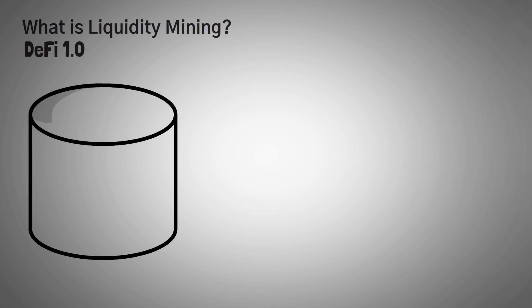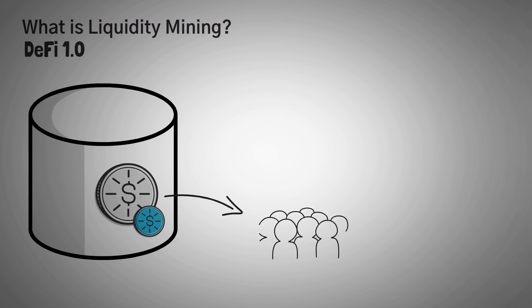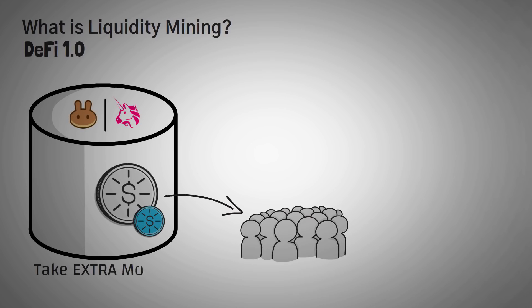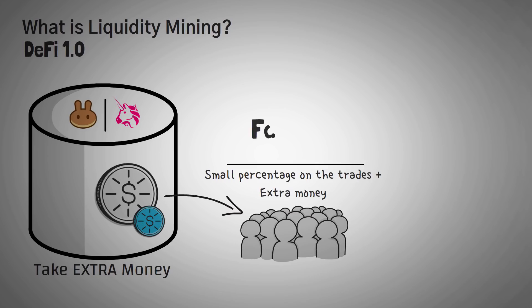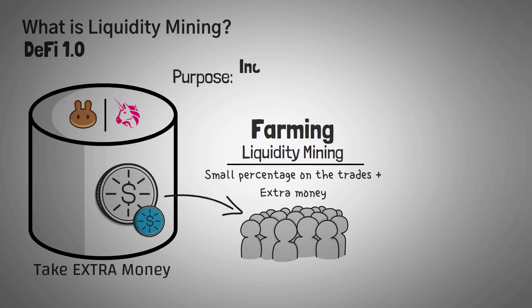What is liquidity mining? A big part of DeFi 1.0, or the old system, was that to incentivize people to actually provide their tokens to a place like PancakeSwap or Uniswap, someone would give them extra money so that they could earn a small percentage on trades automatically, but then earn even more due to these incentives. These incentives are currently referred to as farming rewards, or even liquidity mining. The purpose was to increase liquidity so there would be more money for traders to trade with, making the price less volatile.